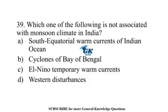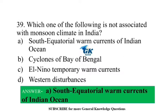Which one of the following is not associated with monsoon climate in India? South Equatorial Warm Currents of the Indian Ocean.